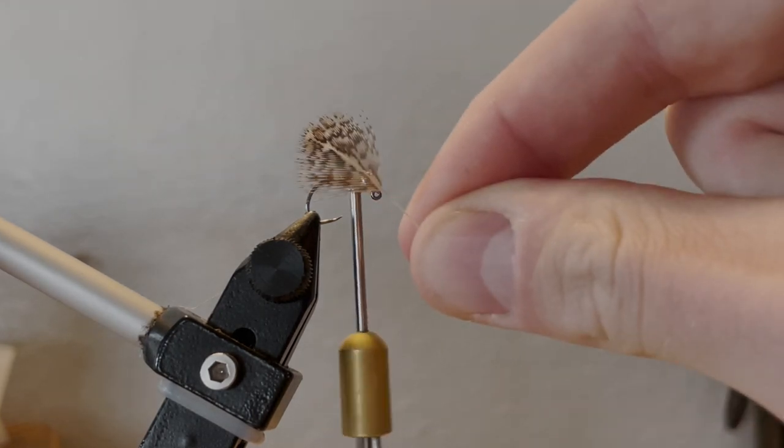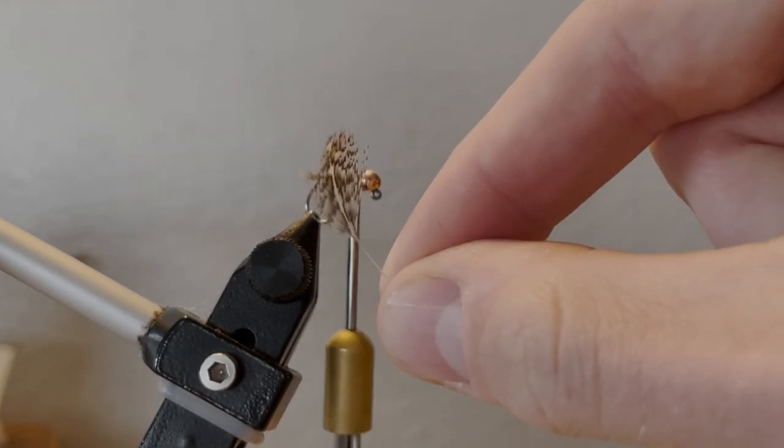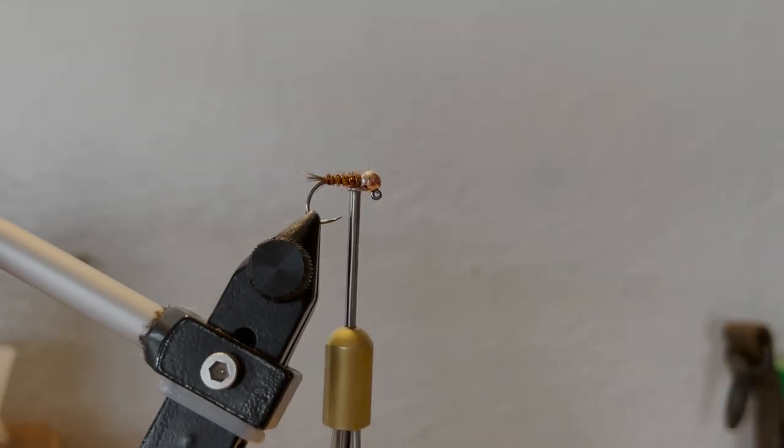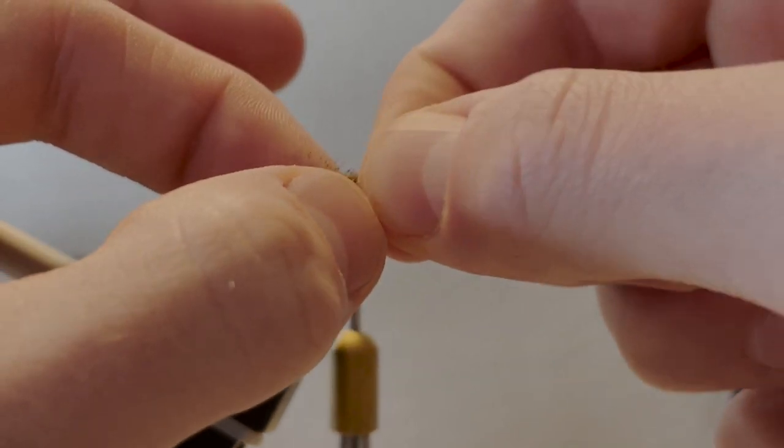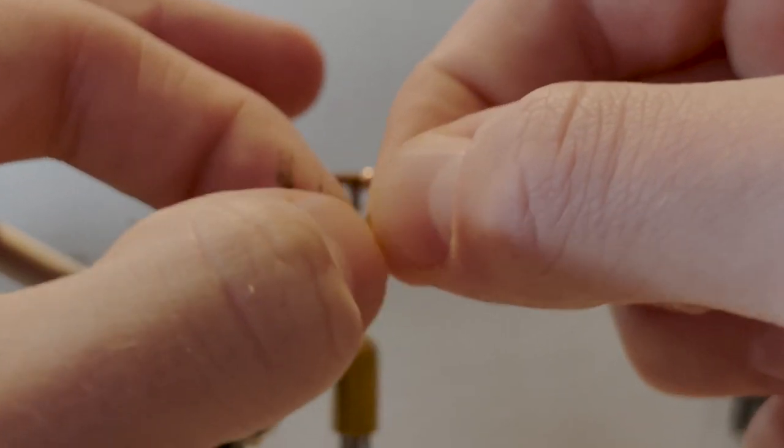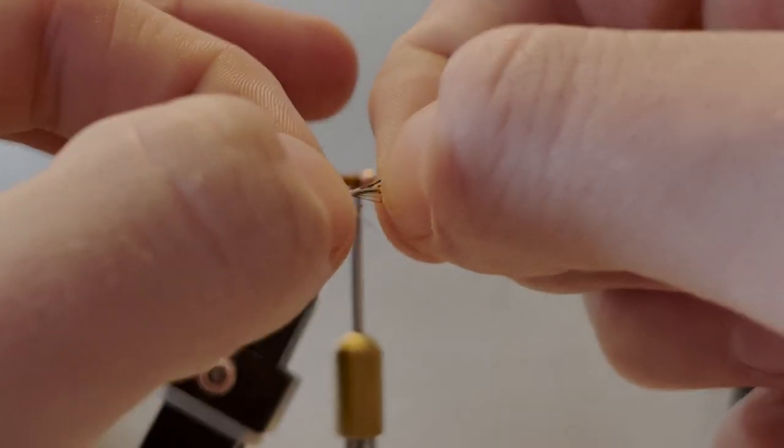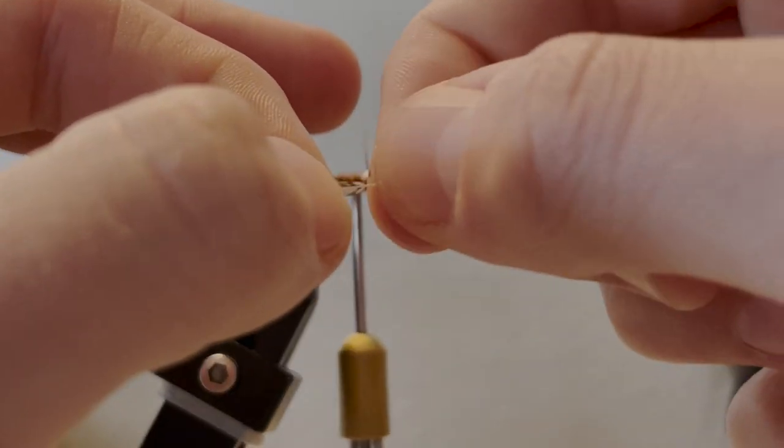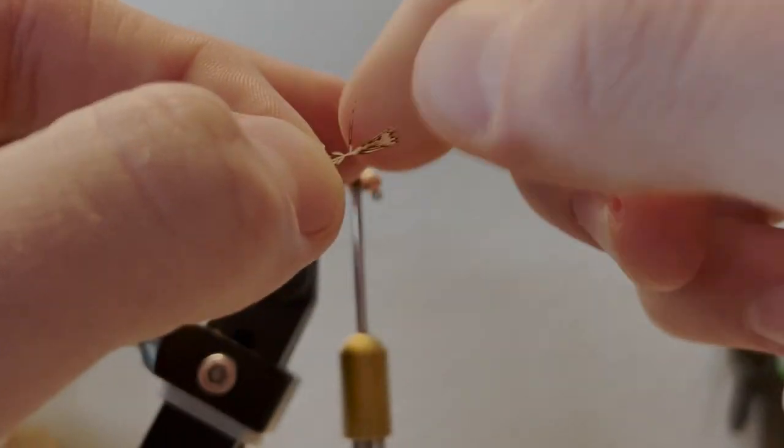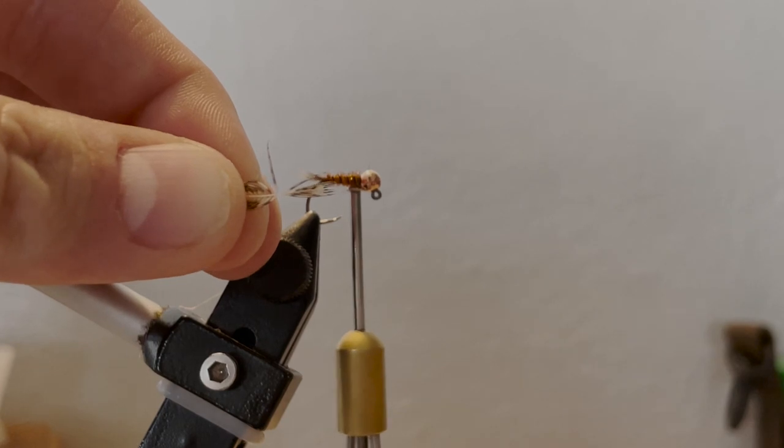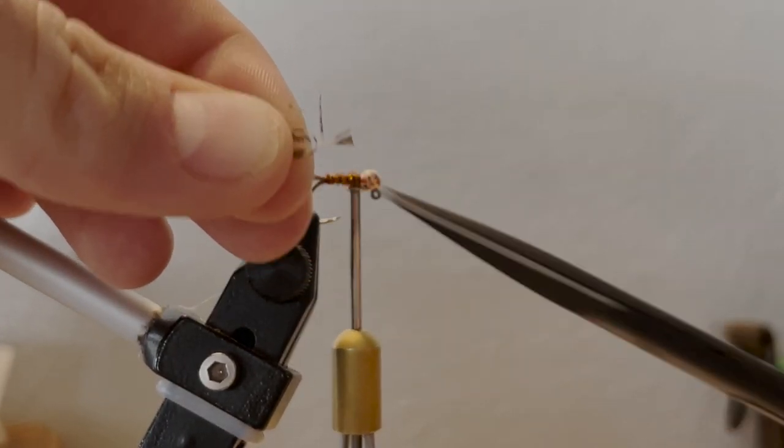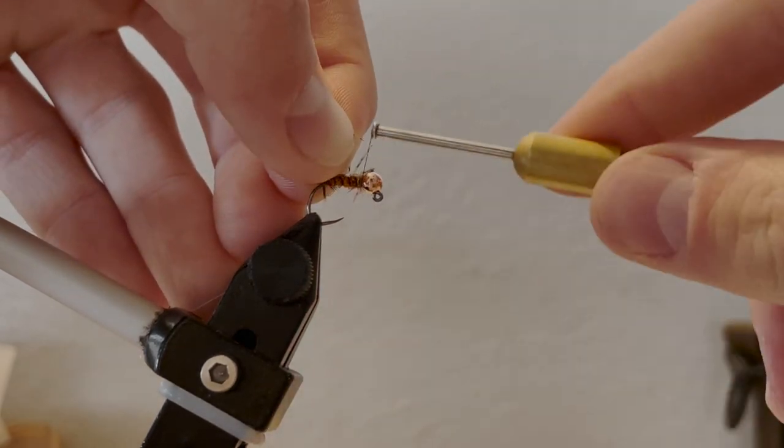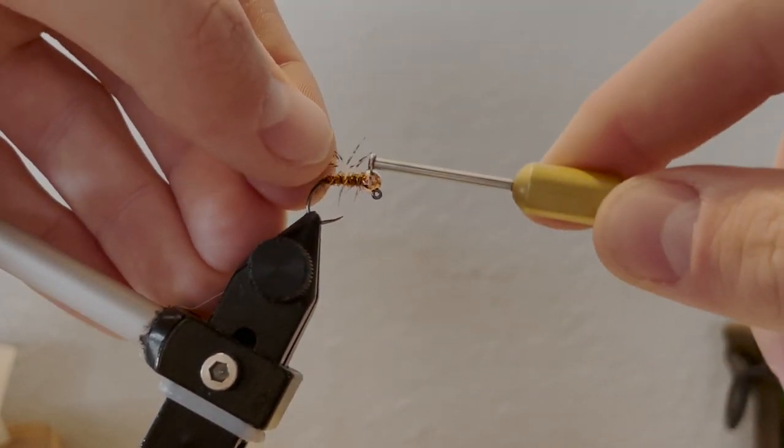Grab the partridge feather you have selected from the cape. Pull down the fibers except for the tip, just like this—leave the tip out there just like that. Snip it off just a bit so you create a little triangle. Tie it in by that triangle right there at the head, right behind the bead.